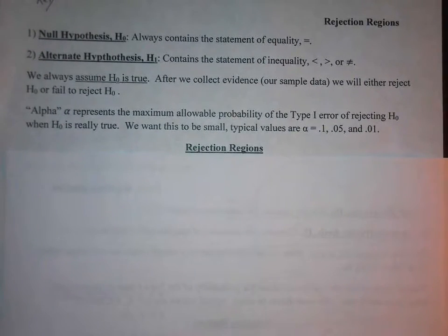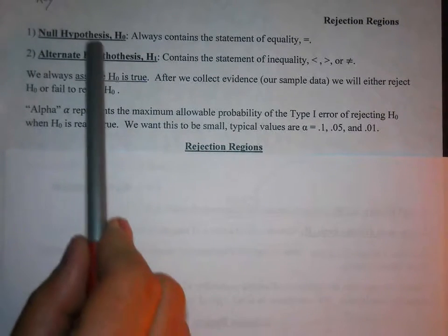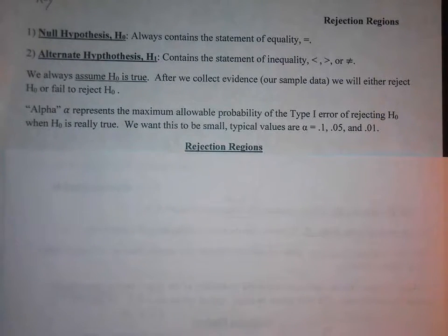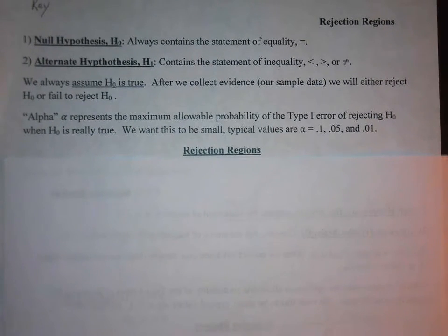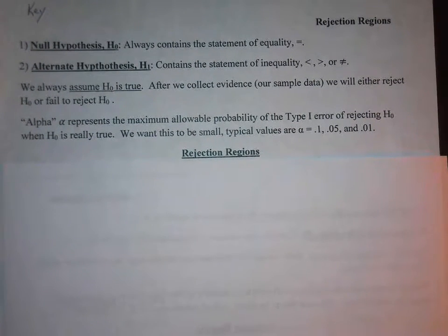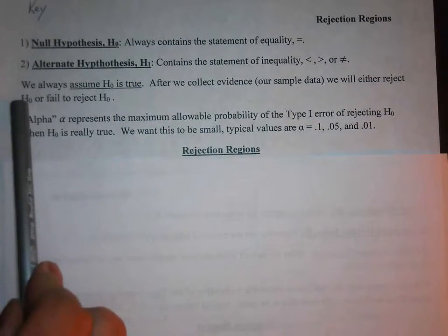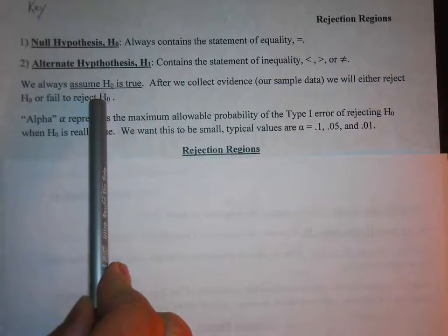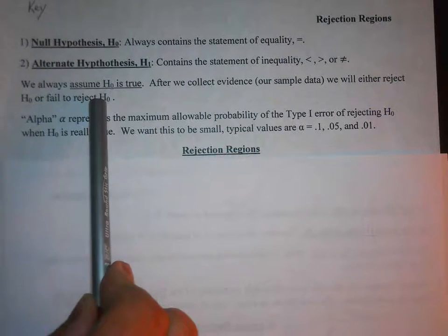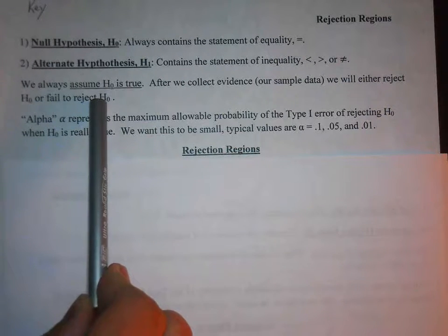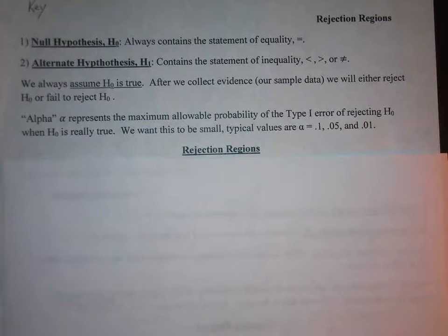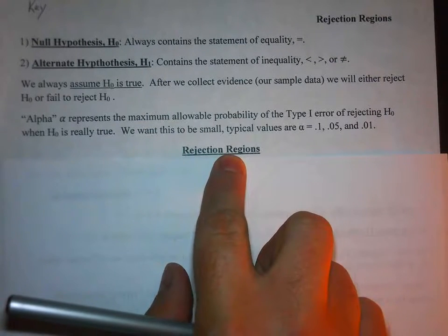The second step in a hypothesis test, after you create your hypotheses, is to remember that it's going to come down to making a decision about the null hypothesis — are we going to reject it or fail to reject it? So the second step, after we form hypotheses, is to create our rejection regions.